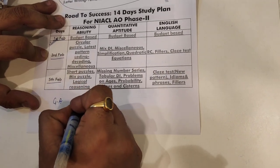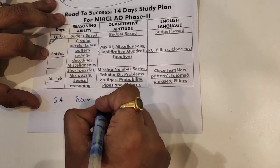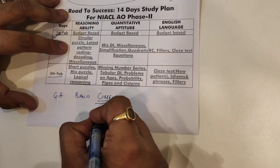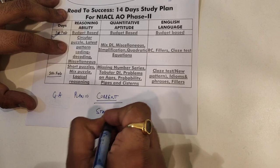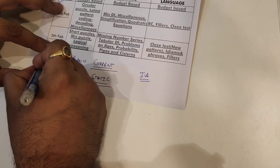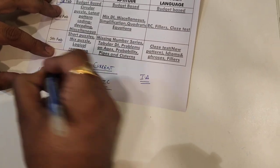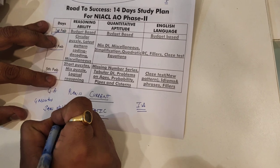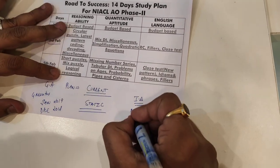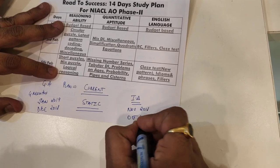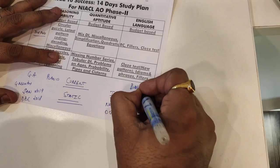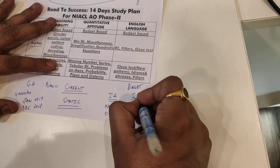For General Awareness, the focus will be on current affairs — you need to cover a maximum of 4 months: January, December, November, and October. Also important is the Budget. Along with current affairs, cover static awareness and insurance awareness as well.